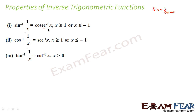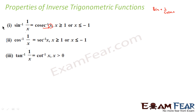Please note that for cosec⁻¹(x), the range of x is greater than or equal to 1 or less than or equal to −1, because between −1 and 1, x is not defined. Similarly for sec⁻¹(x) and others. Let's prove at least one of these.